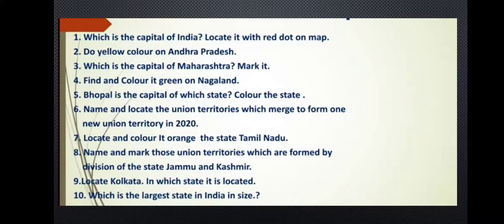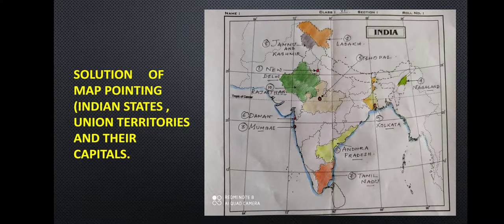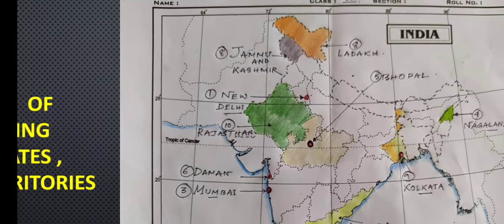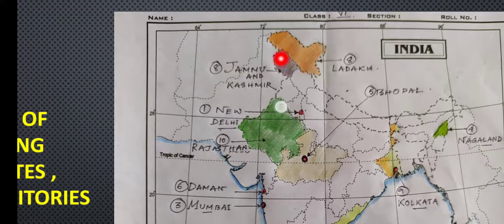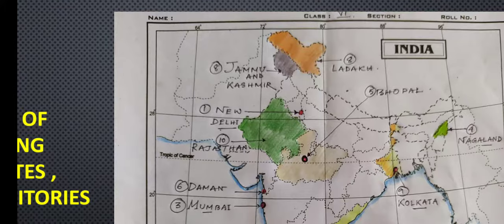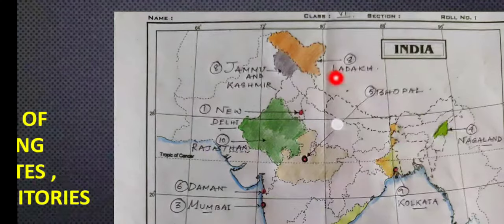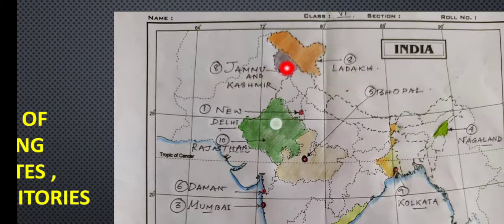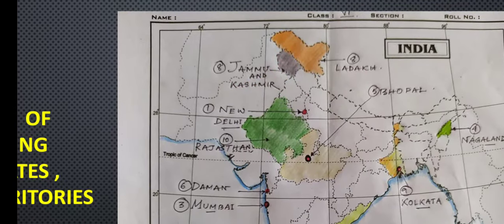Mark and name those union territories which are formed by the division of Jammu and Kashmir. Jammu and Kashmir was a state, but in 2019 it became a union territory. So Jammu and Kashmir became a union territory, and Ladakh is the other division. In the northern part, I have given both number eight. Jammu and Kashmir is this part, and Ladakh is this part. If you have the old map where the part is not divided, you just draw the division or boundary line, color it, and label them.